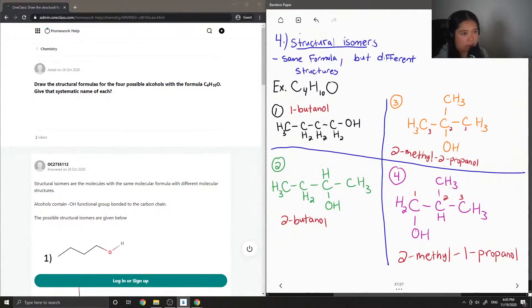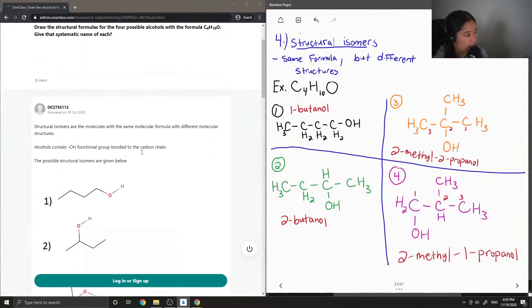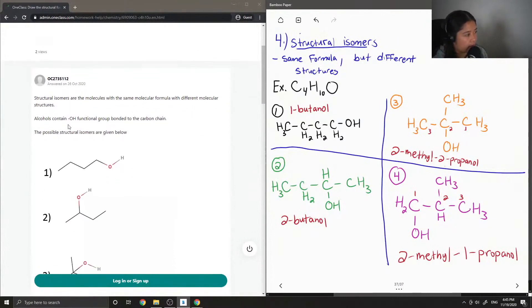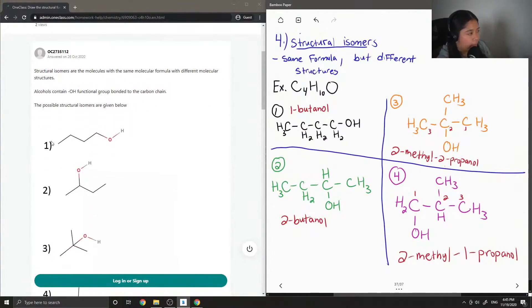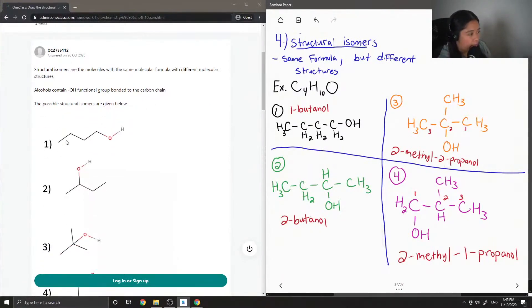These are the four different structural isomers for C4H10O. Now let's see what our junior tutor said. Structural isomers are molecules with the same molecular formula but different molecular structures. Alcohols contain an OH functional group bonded to the carbon chain. Possible structural isomers are given below.